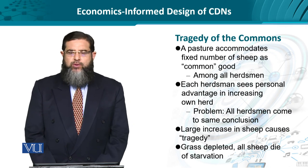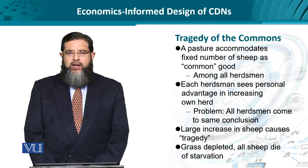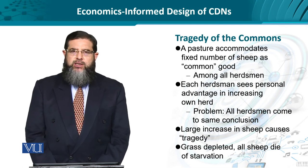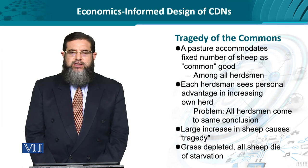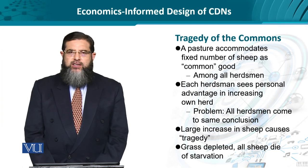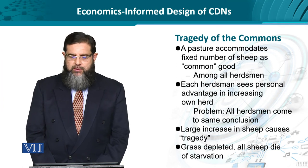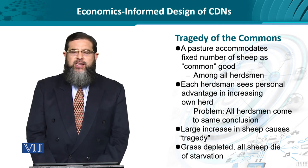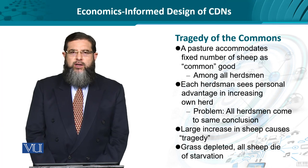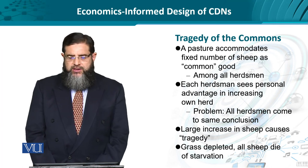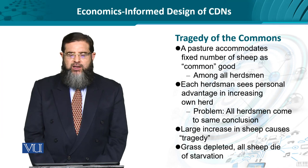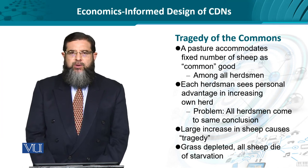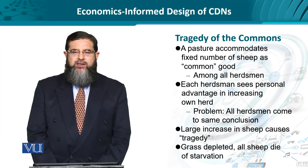So what is the tragedy of commons? Imagine a pasture that accommodates a certain fixed number of sheep. This is a common good that serves a community of certain herdsmen. On an individual level, each herdsman or shepherd is interested in maximizing personal interest — more sheep, more wool, more meat, more money.